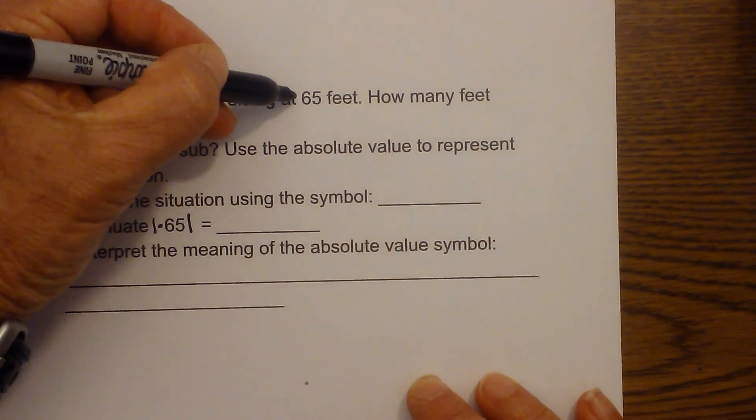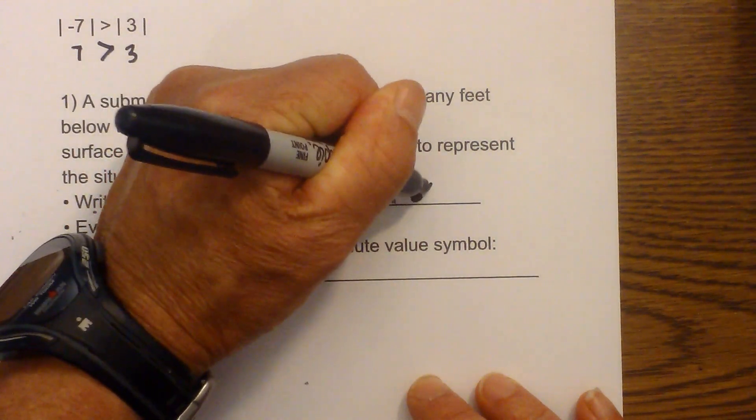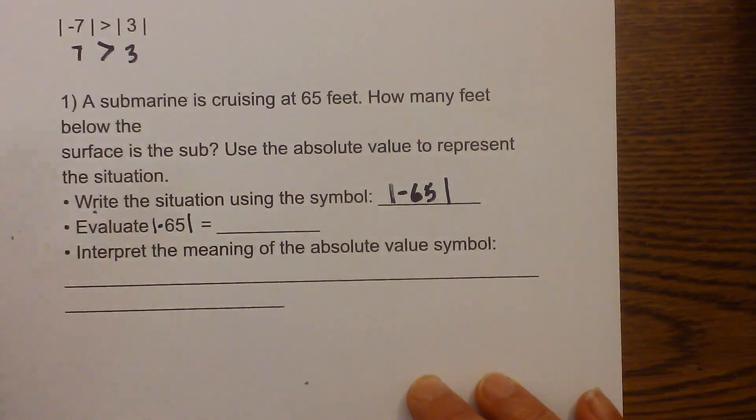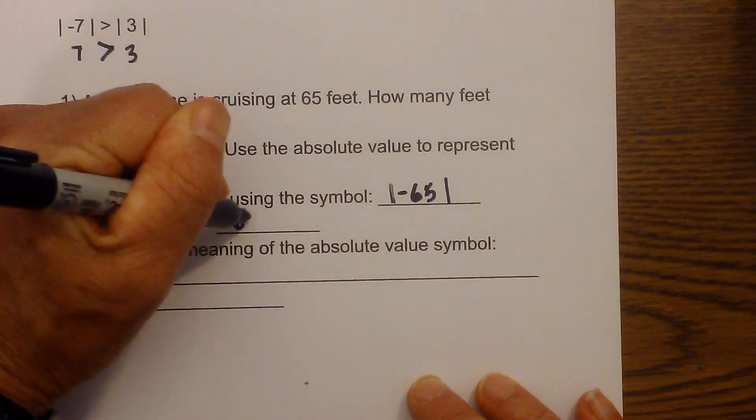Well, it is 65 feet below the surface. So it would be the absolute value of negative 65. And then if you evaluate, the absolute value of negative 65 is 65.